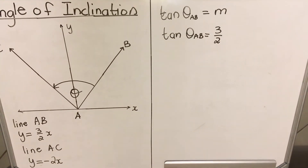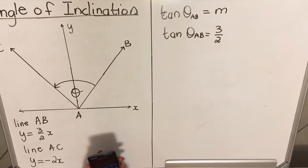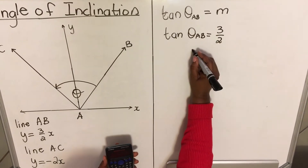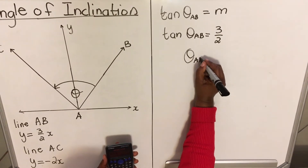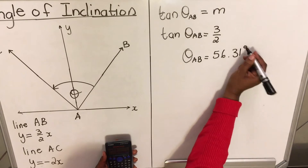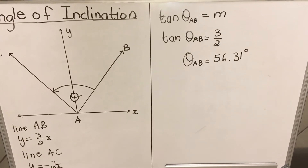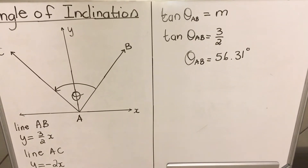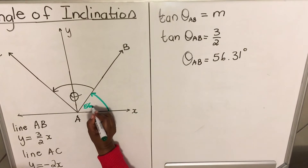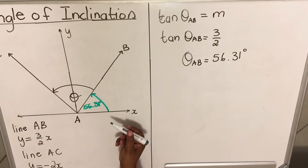Then we can find the angle for AB: we go shift-tan of (3/2). The angle of inclination for AB equals 56.31 degrees. That is the angle from the x-axis to the line — this angle here from the x-axis to the line. So this angle is 56.31°. That's the definition of the angle of inclination.